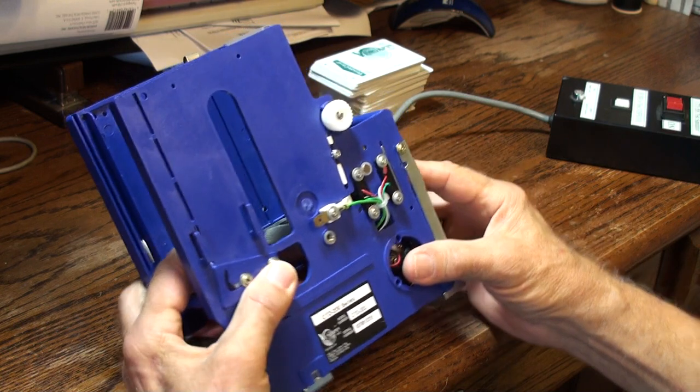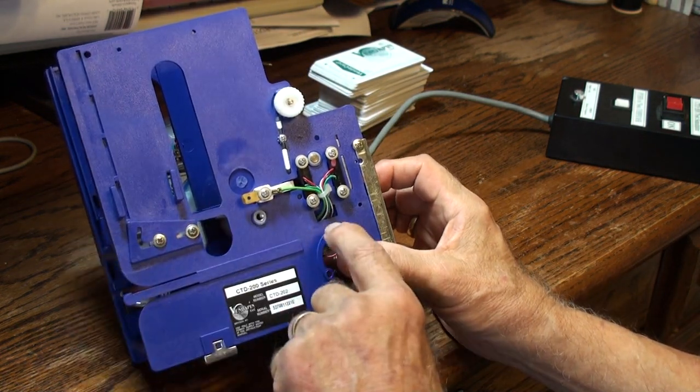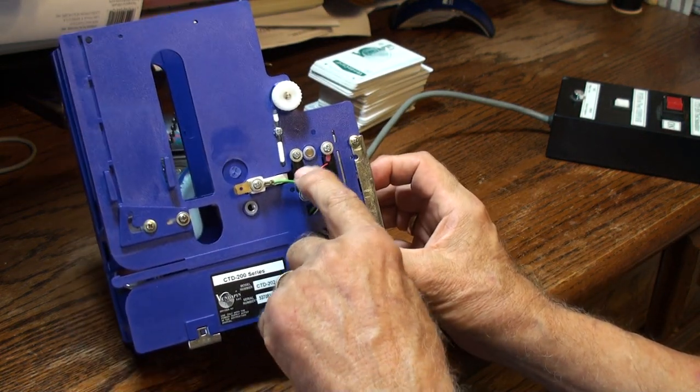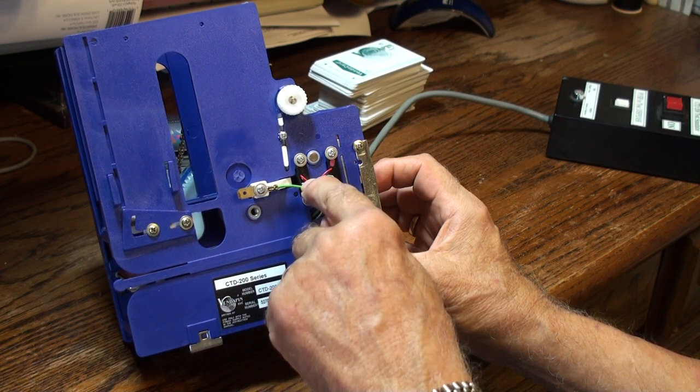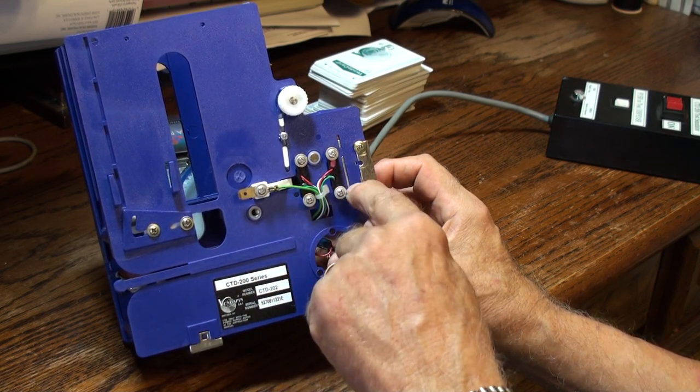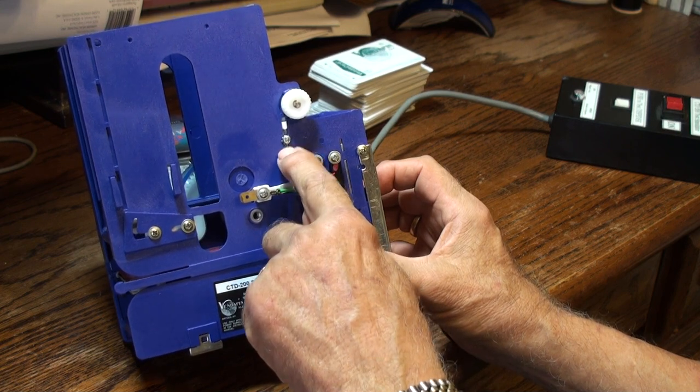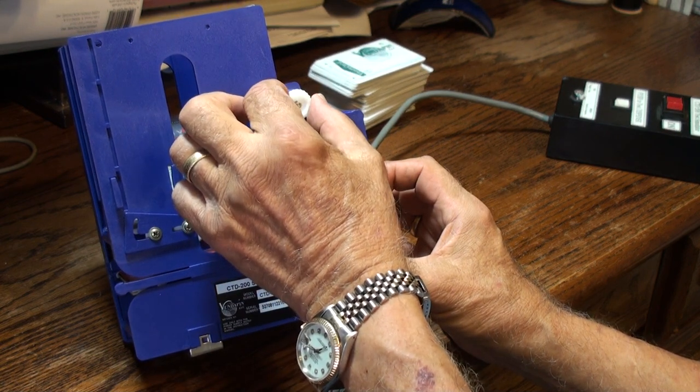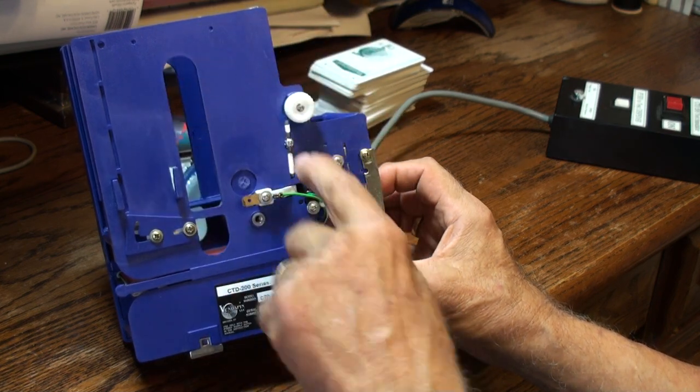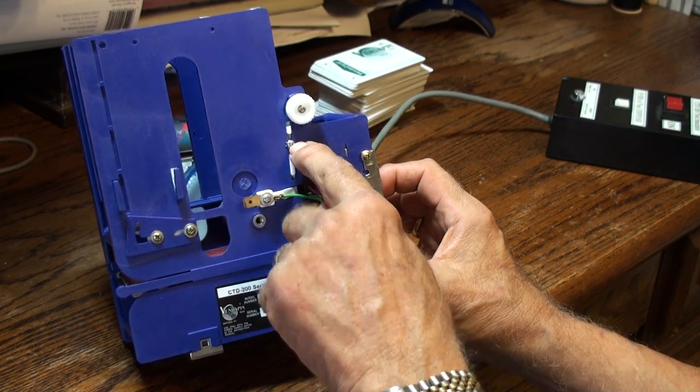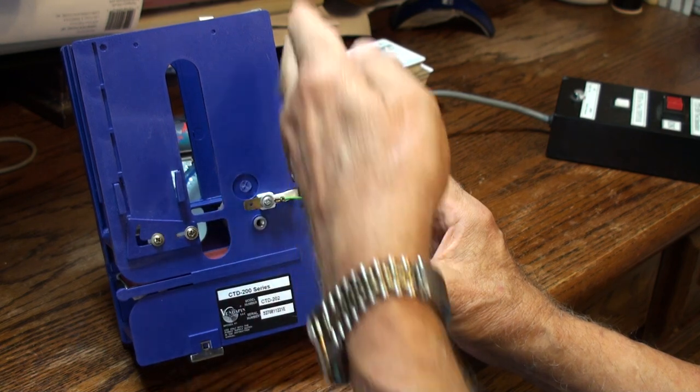And then on the side of the dispenser are two optos that when the card is dispensed through, it sees the card start and end and when to hold it. This is adjustable up and down. We have a little pull knob here, the white knob. You pull it back and you can turn it. Loosen the screws on each side first, then you can turn this knob to raise and lower the gate.